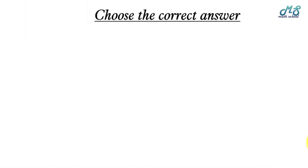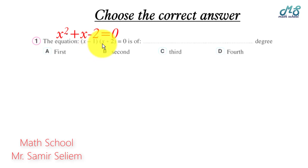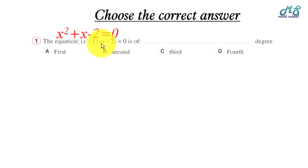Let's revise some exercises. Number one: the equation x minus 1 times x plus 2 equals zero is of what degree? Expanding gives x squared plus x minus 2 equals zero. The greatest power of x is 2, so it is an equation of the second degree.